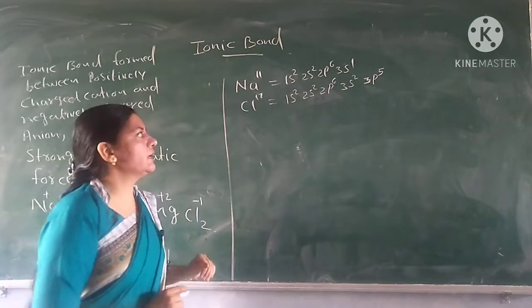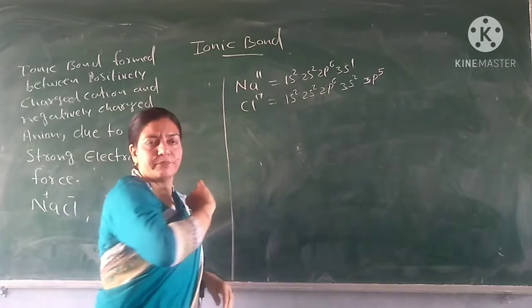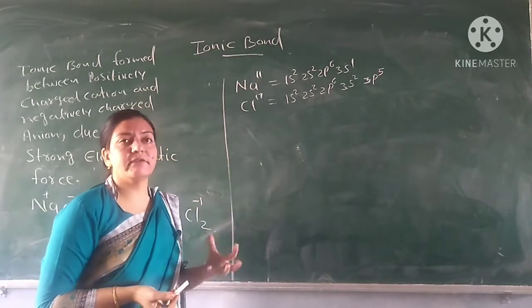Sodium has one electron in its outer shell. To complete its octet, chlorine needs one more electron, as it has 7 electrons in its outer shell.